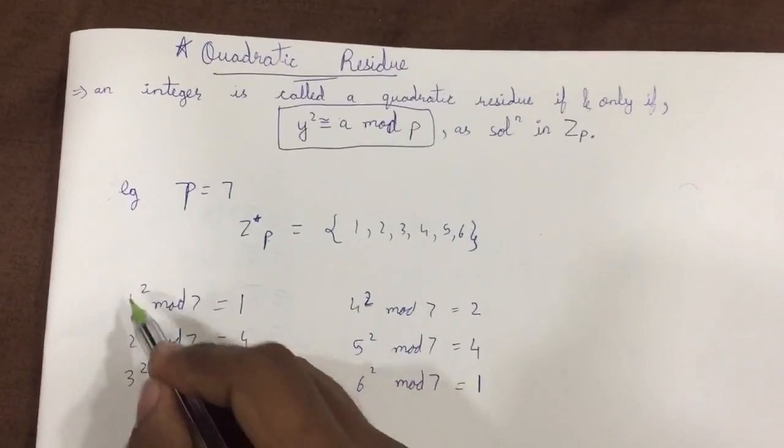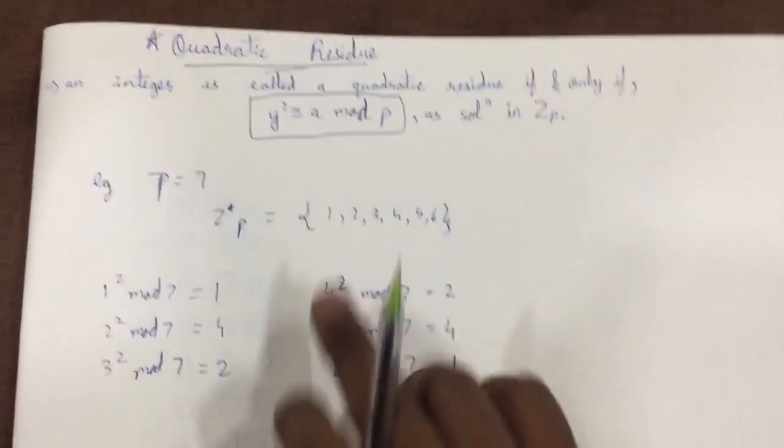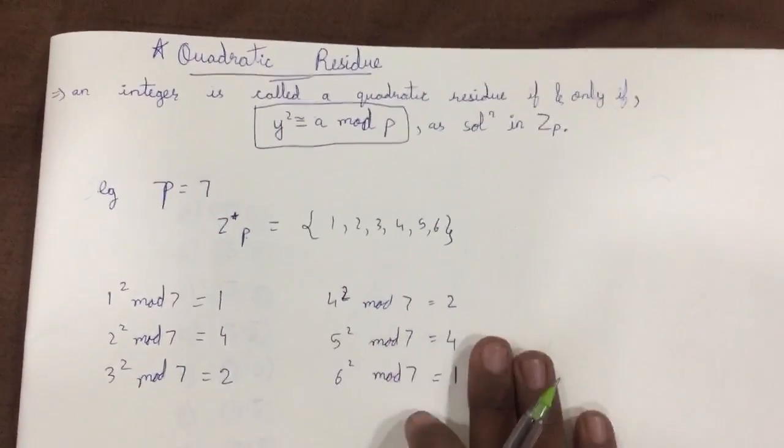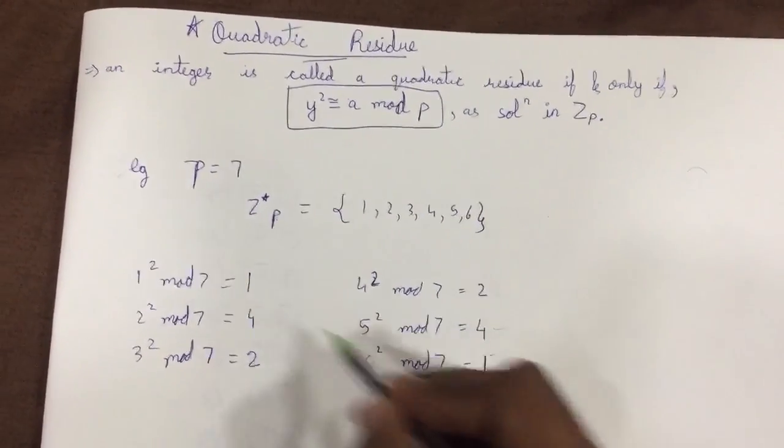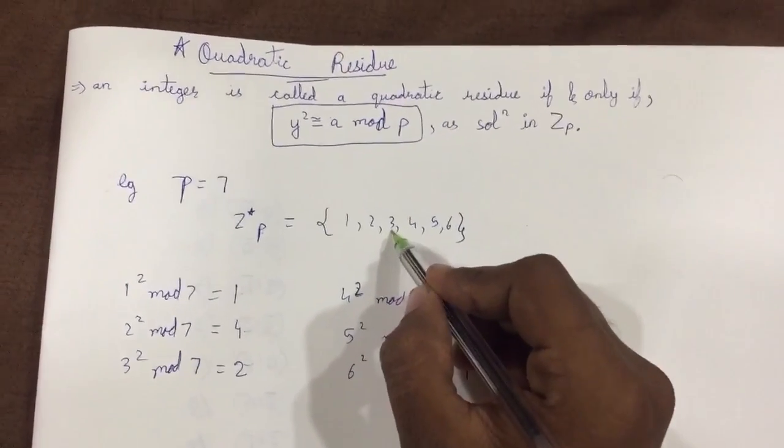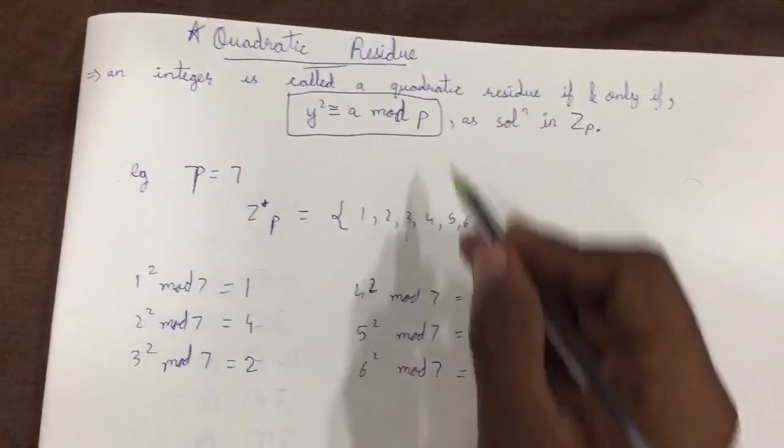These are the values we got after applying the formula y² congruent to a mod p. So what this suggests is that we just got the values 1, 2, 4, repeating. The values 3, 5, and 6 we are not able to get using this formula.